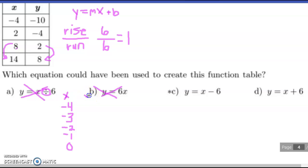And what would happen to my y values? Well, I started at negative 10 here. If my rate of change is 1, I'm going to add 1 to negative 10, which is negative 9, negative 8, negative 7, and finally,